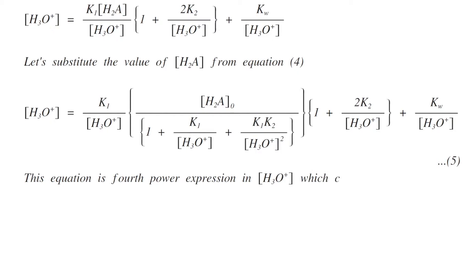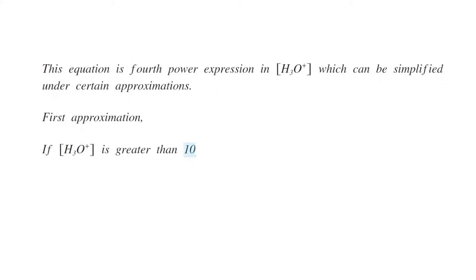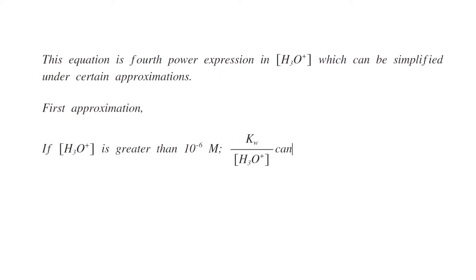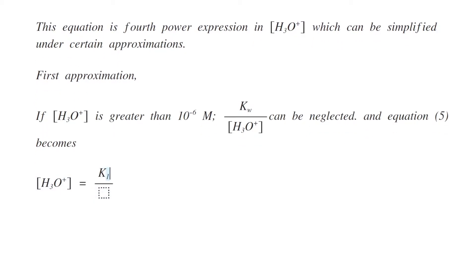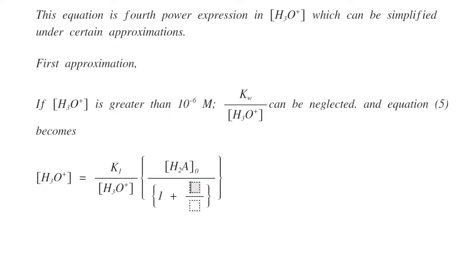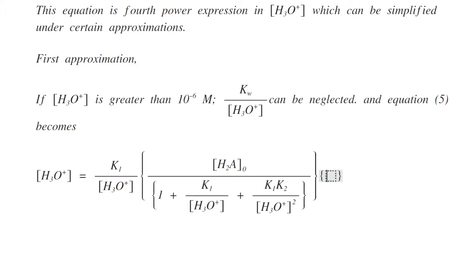This equation is a fourth-power expression in [H3O⁺] which can be simplified under certain approximations. For the first approximation: if [H3O⁺] is greater than 10⁻⁶ mol/L, then Kw/[H3O⁺] is very small and can be neglected. Equation five then becomes equation six: [H3O⁺] equals (K1/[H3O⁺]) times ([H2A]₀ / (1 + K1/[H3O⁺] + K1K2/[H3O⁺]²)) times (1 + 2K2/[H3O⁺]).